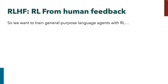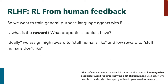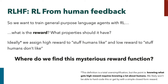Hopefully you're somewhat convinced we want to train general-purpose language agents using RL. The most obvious question is: what are we going to optimize, what is the reward, and what properties should it have? Ideally we want a reward that assigns high reward to stuff humans like and low reward to stuff humans don't like. Knowing what should have high reward really requires knowing something about humans, so it's probably not enough to use something simple and hard-coded. We really need to elicit annotations or behaviors from humans to learn this reward function.